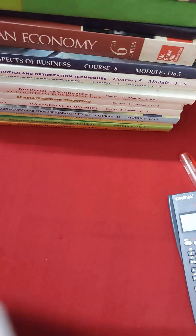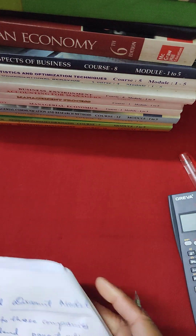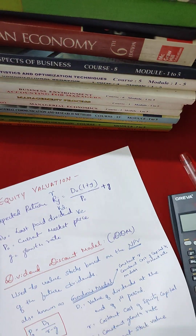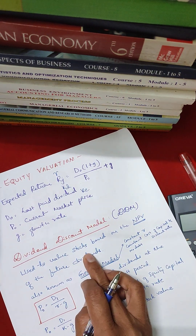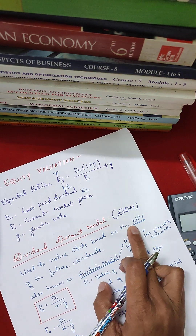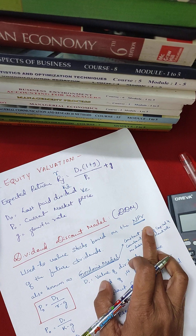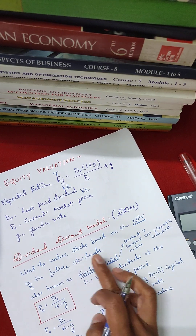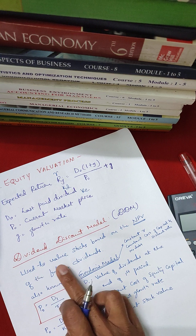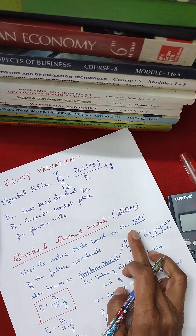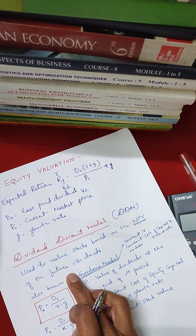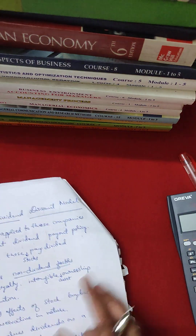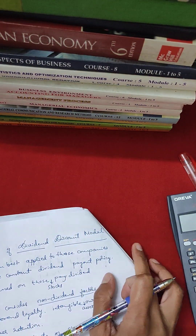The dividend discount model has three limitations. The dividend discount model is used to value stocks based on the NPV — net present value — specifically the net present value of the future dividends. So, limitations of the dividend discount model follow.